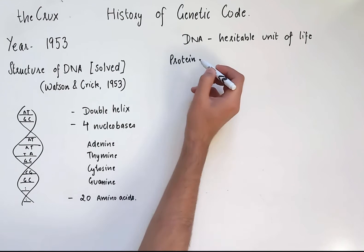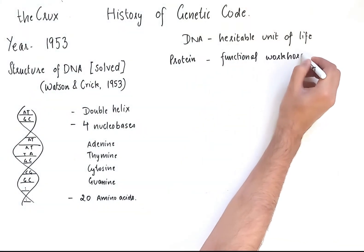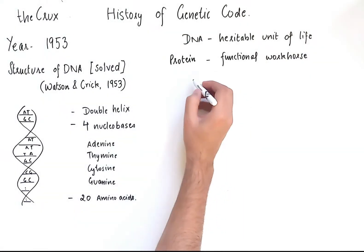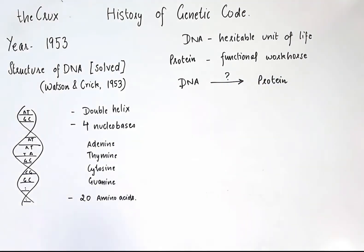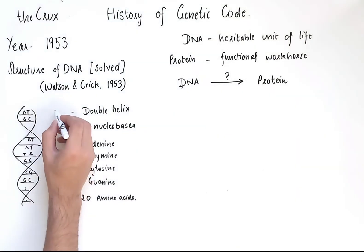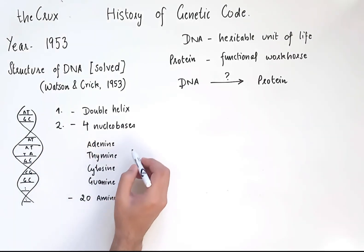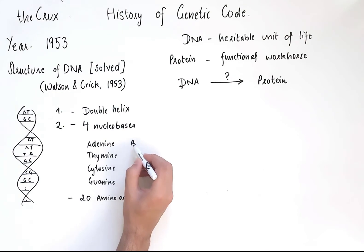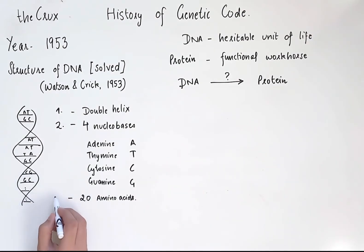And also because proteins are the workhorses of the cell. The question that puzzled scientists after the discovery of DNA is: how is information transmitted or converted from DNA to proteins? To reiterate, three key pieces of information scientists knew were: DNA is a double helix, it has four nucleobases — A, T, G, and C — and there are about 20 amino acids.